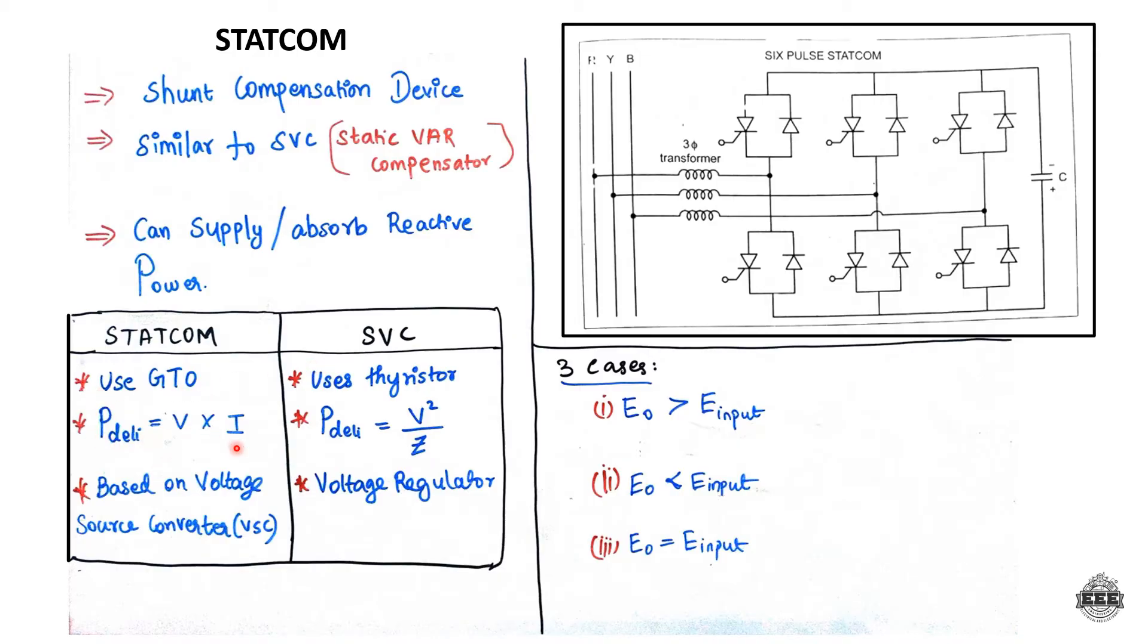In STATCOM, output power equals voltage times current. In SVC, output power is V squared by Z, so current depends on voltage. STATCOM is based on voltage source converter and uses a voltage regulator.